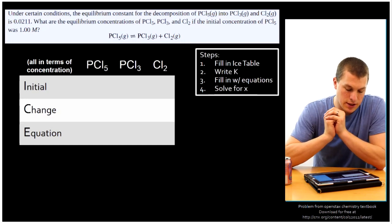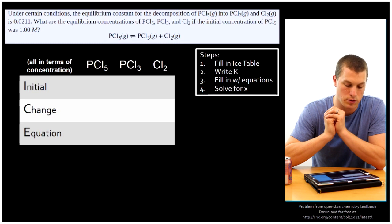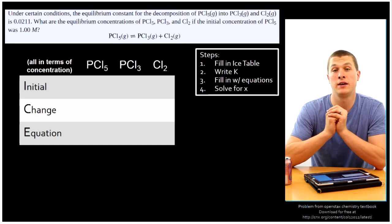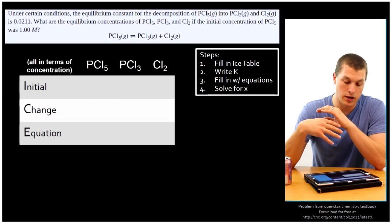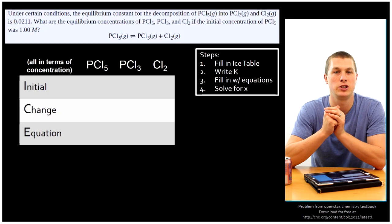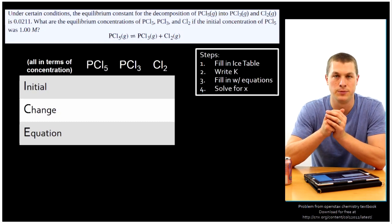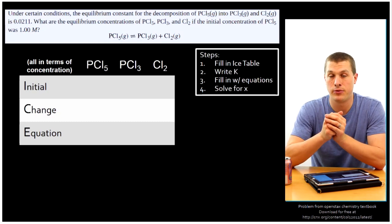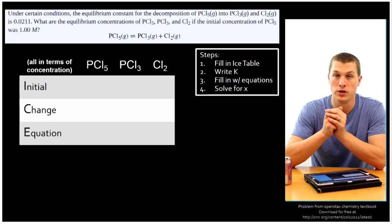So if you look at this problem down here, it says under certain conditions, the equilibrium constant for the decomposition of PCL5 into PCL3 and CL2 is 0.0211. What are the equilibrium concentrations of these guys if the initial concentration of PCL5 was one molar? So notice there, we've just been given what we started with. We started with one mole per liter of phosphorus pentachloride. And what we want to know is what's going to happen at equilibrium. And we have the equilibrium constant, so we have all the information we need to do that. But it is algebraically somewhat challenging. So we're going to go step by step through this algebra. And if it feels challenging, that's because this is one of the more difficult problems that you do in general chemistry.